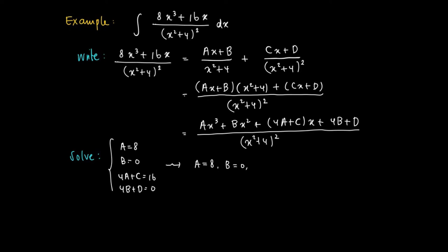We get an easy solution: a equals 8, b equals 0, c equals minus 16, and d equals 0. So we can write the original rational function as 8x/(x² + 4) minus 16x/(x² + 4)². Taking a primitive of this rational function is the same as taking a primitive of each term.